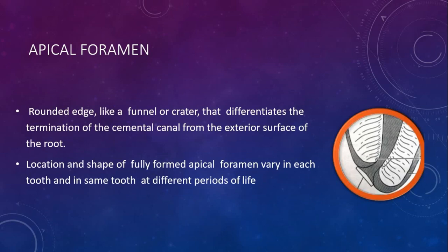The apical foramen is a rounded edge like a funnel or crater that differentiates the termination of the cemento-dentinal canal from the exterior surface of the root. A foramen is simply an opening — it's the opening of the root towards the apex. The location and shape of a fully formed apical foramen vary in each tooth and in the same tooth at different periods of life.